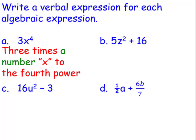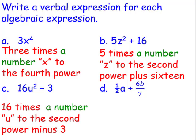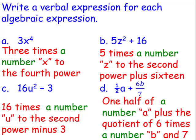On the next one, 5 times a number z to the 2nd power plus 16. Next, 16 times a number u to the 2nd power minus 3. And the last one has two variables, so we'll say 1 half of a number a plus the quotient of 6 times a number b and 7.